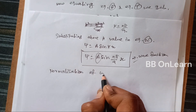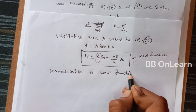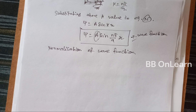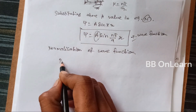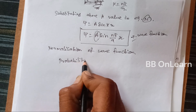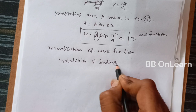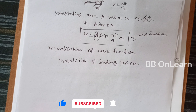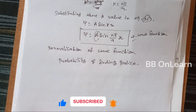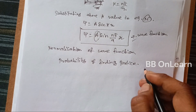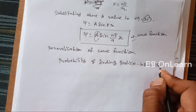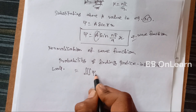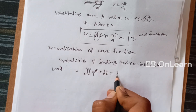Normalization of wave function. The probability of finding a particle inside the wall is equal to the triple integral of psi-star times psi d-tau, which equals 1.